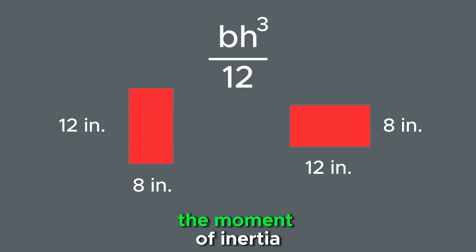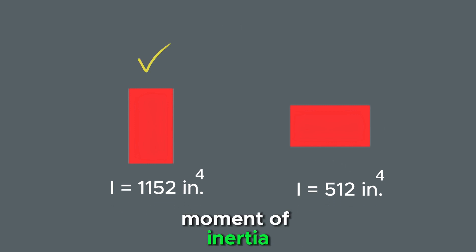When we calculate the moment of inertia for both orientations, the shape with the greater moment of inertia will resist rotation more, even though both shapes have the same mass.